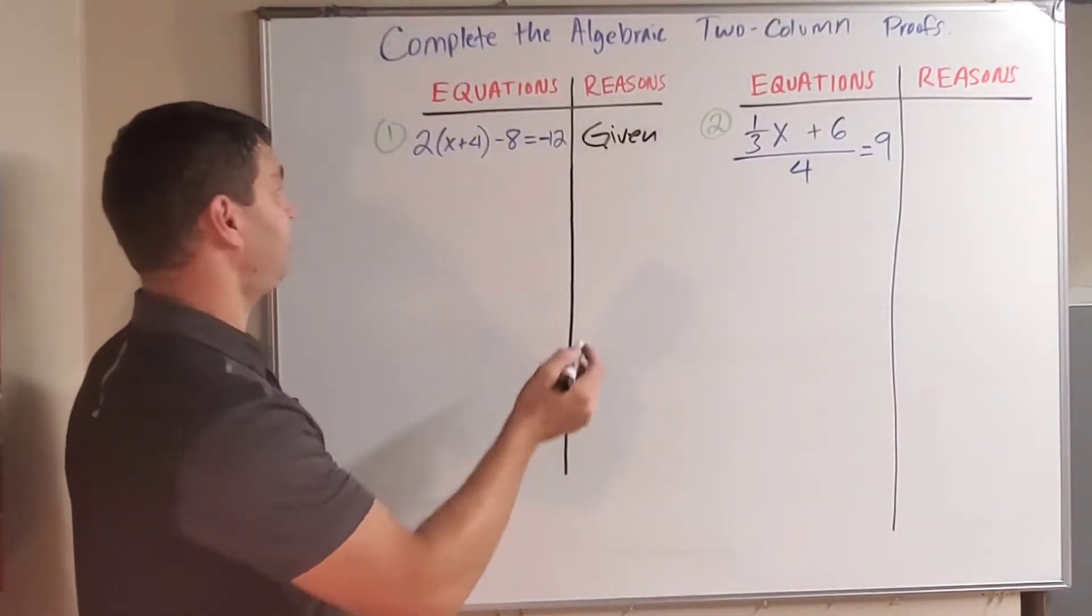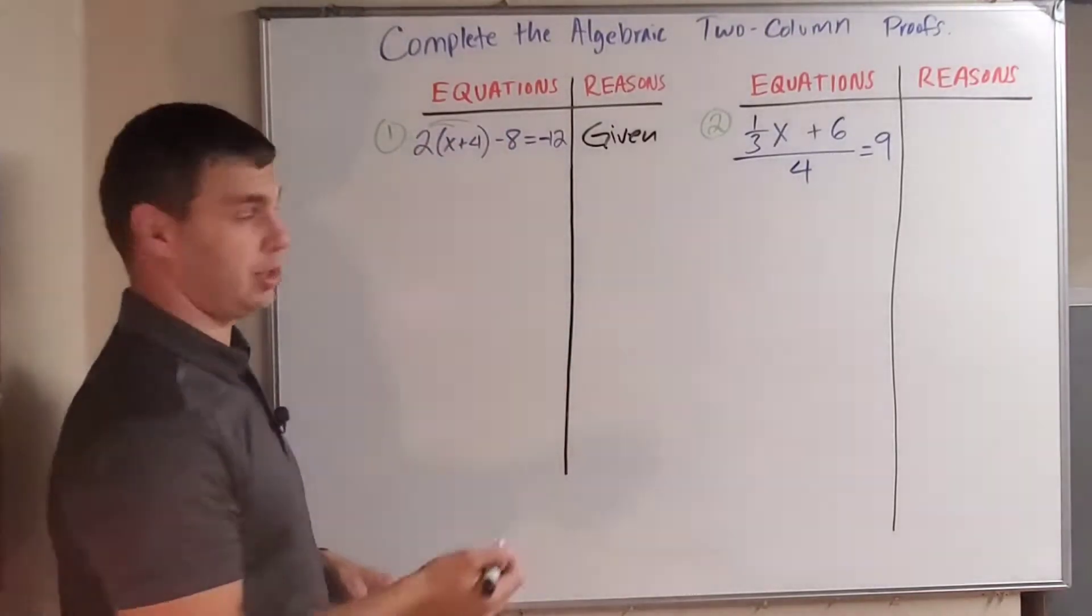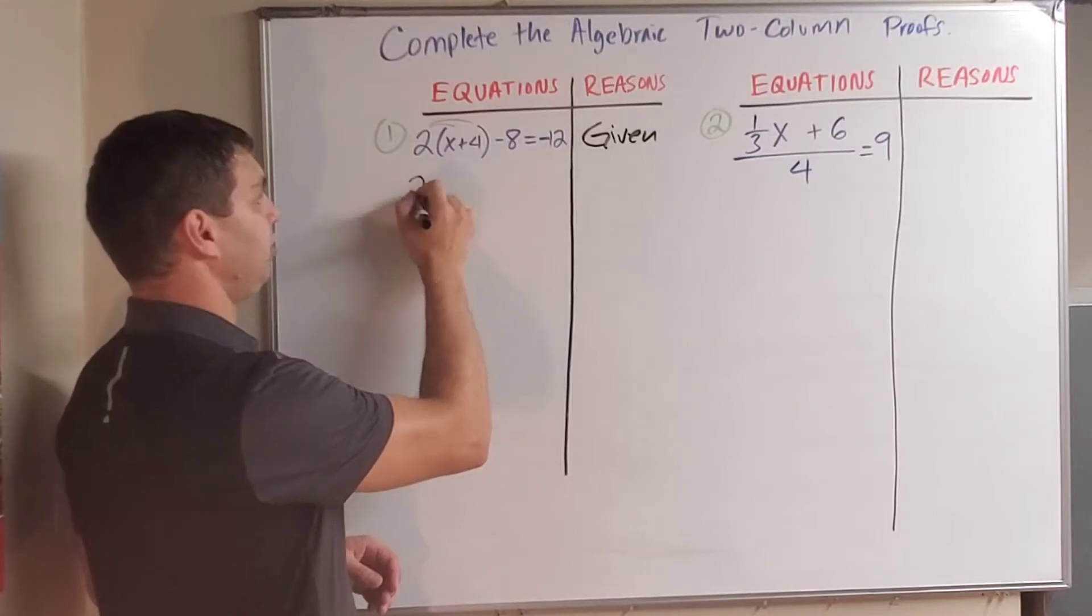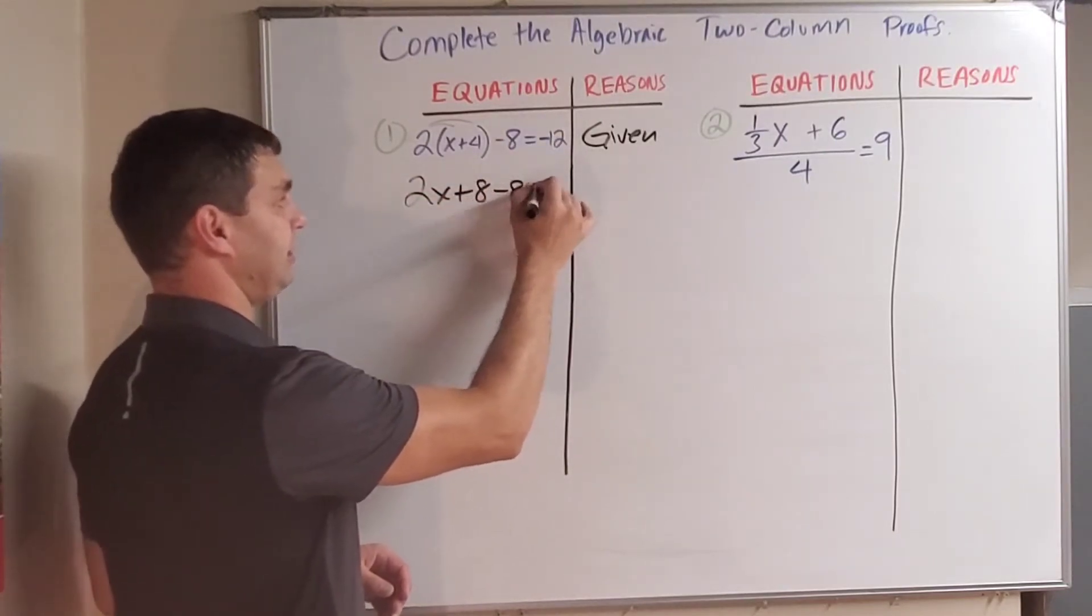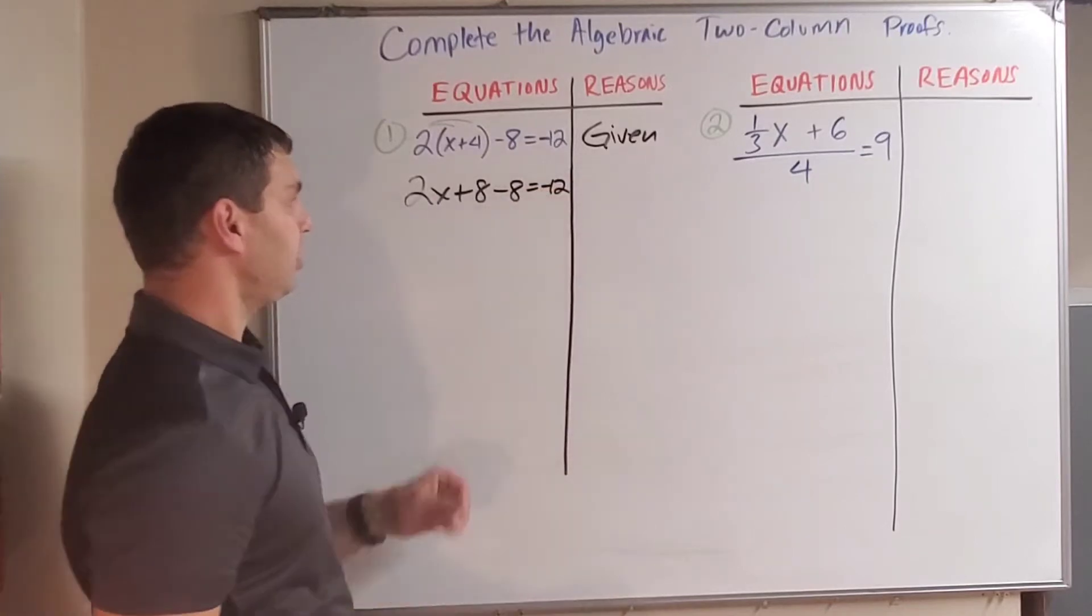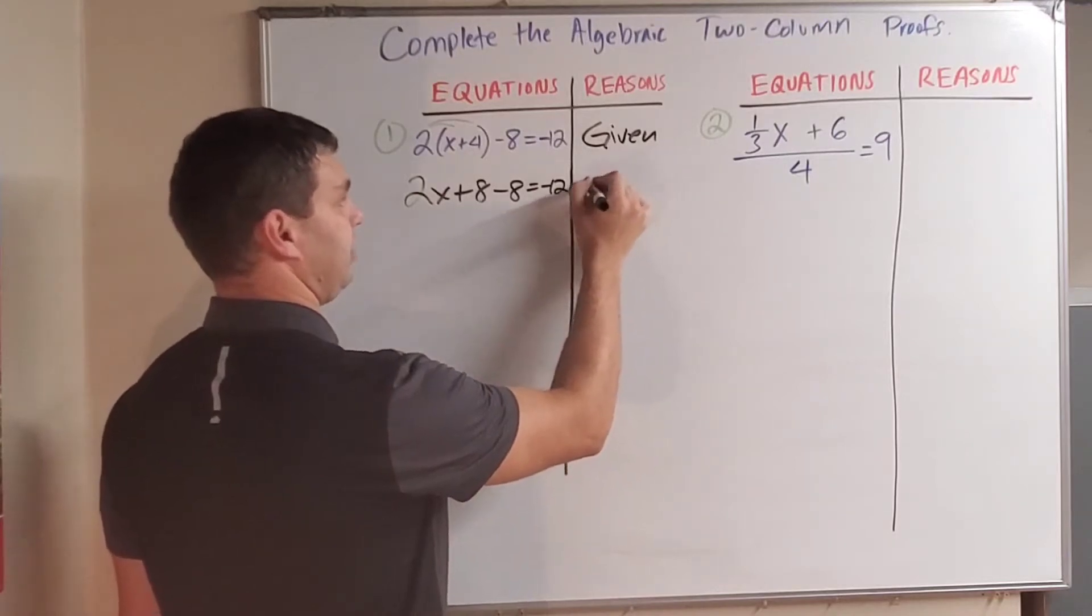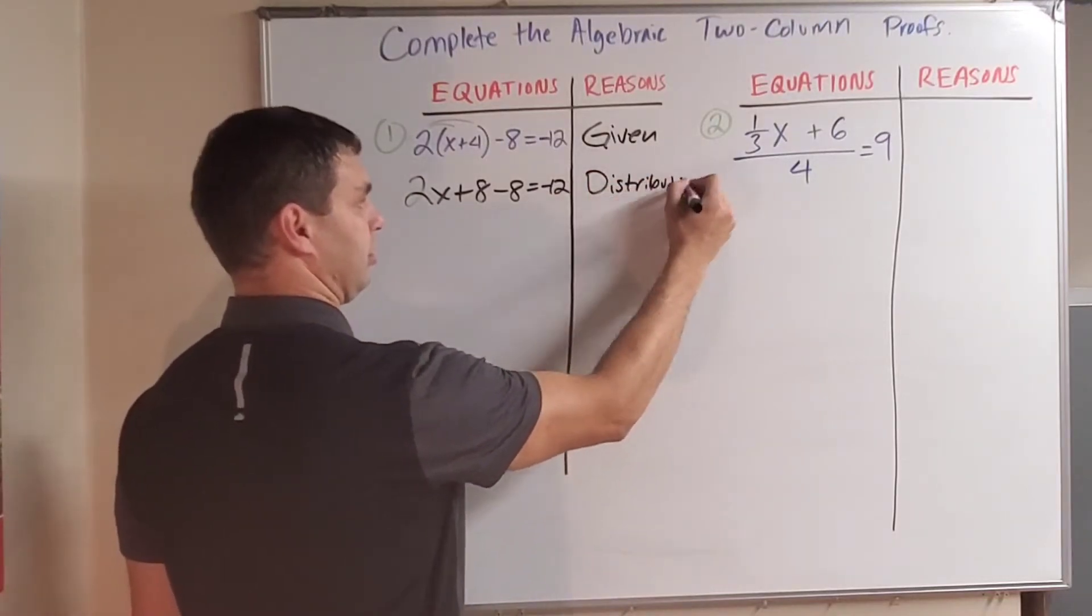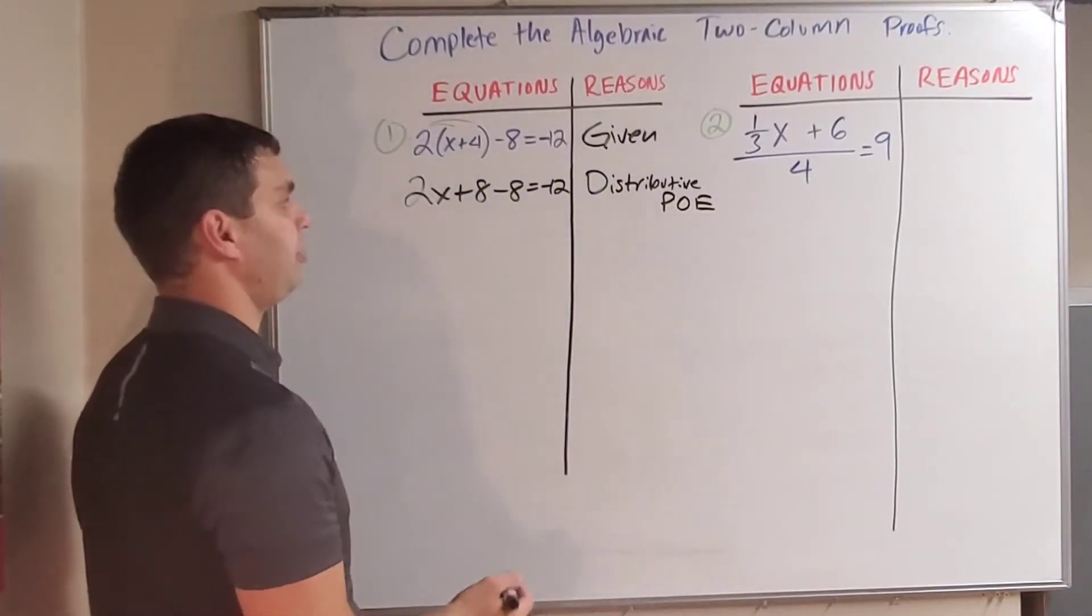To solve this problem, what we need to do first is distribute this 2 into the quantity x plus 4. Two times x plus 4 is 2x + 8, and then bring down the rest minus 8 equals negative 12. So what did I do there? I distributed. This is called a distributive property of equality. So let's say distributive and I'm going to put PoE for property of equality.